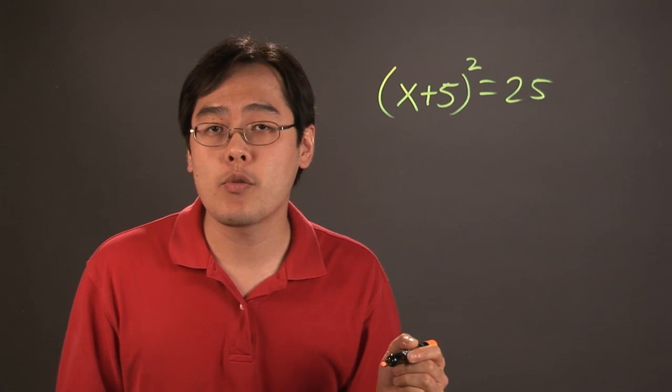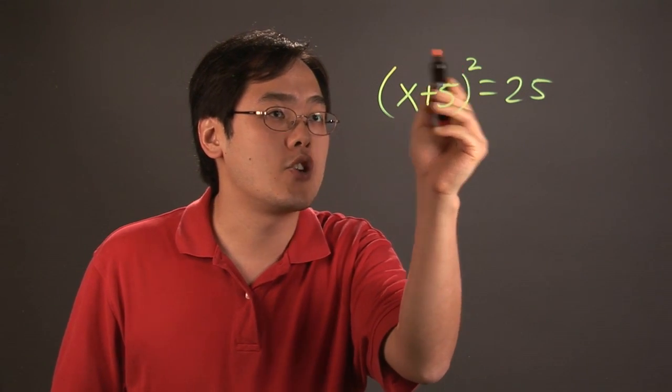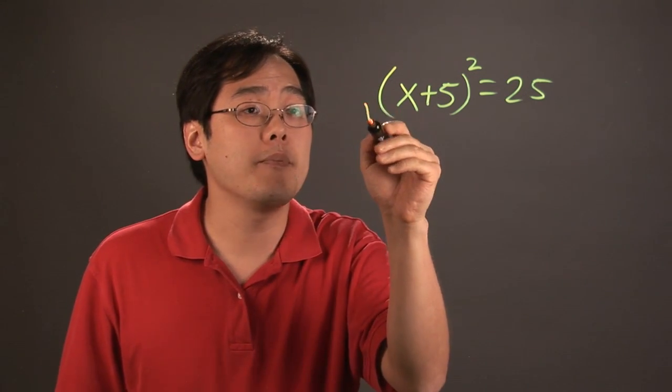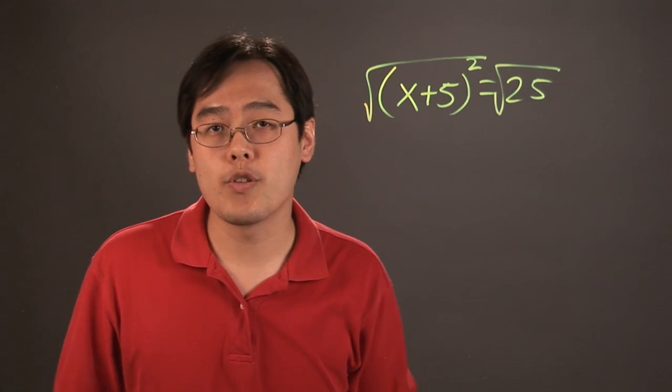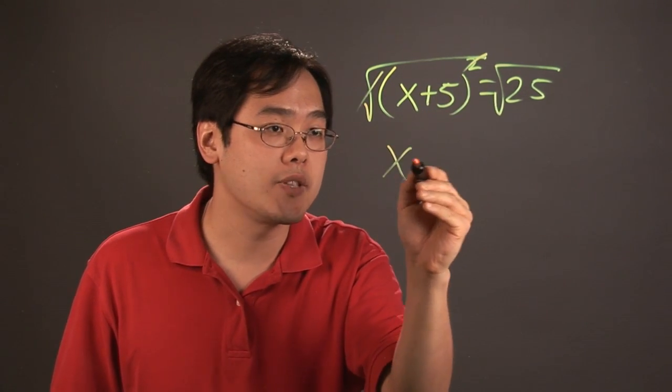Now, before you can use the square root property, just as an FYI, make sure that the term that's squared is by itself, which in this case it is. Now, to use the square root property, as the method stands, take the square root of both sides. What happens is that the square and the square root cancel, you have x + 5 on the left.